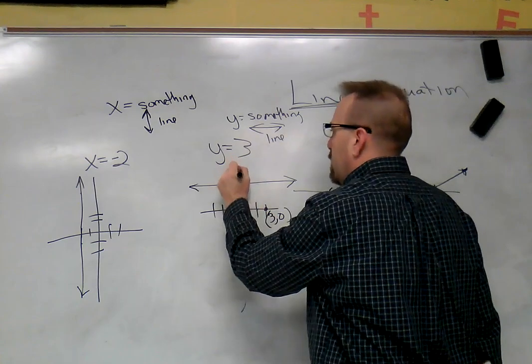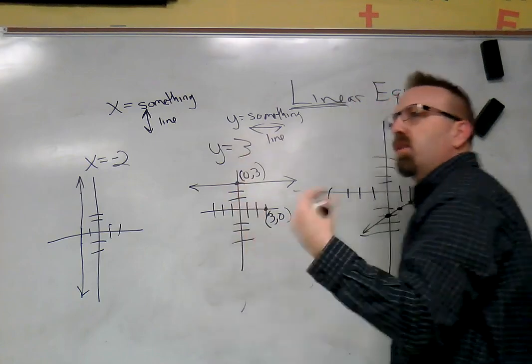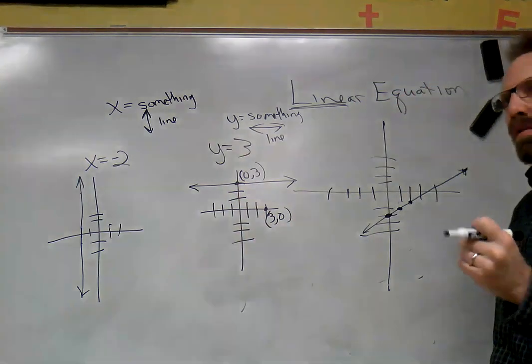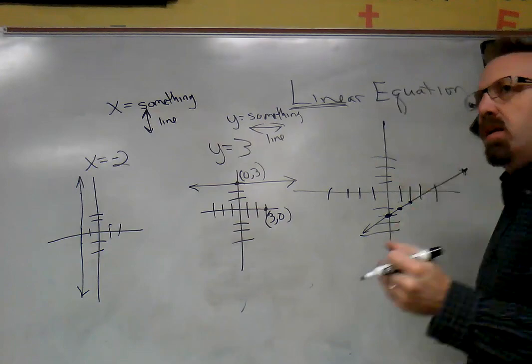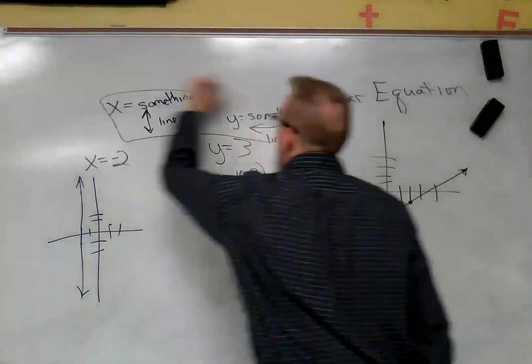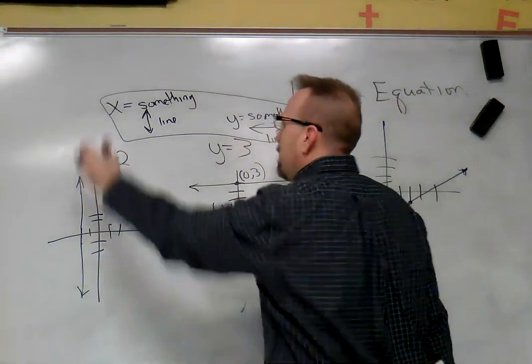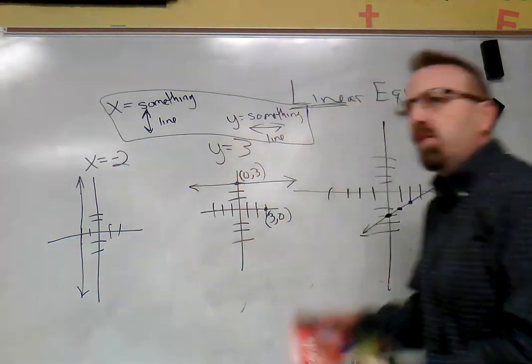But here it's (0, 3), so y is three. If you need to graph that point or two before you graph the line, that'll make it easier. If this is something you want to try and remember, x equals a number is a vertical line. If it's y equals, it is a horizontal line.